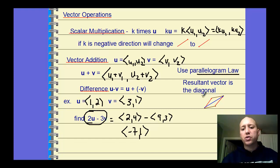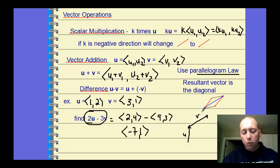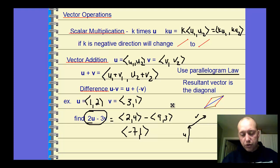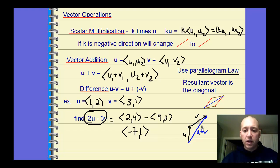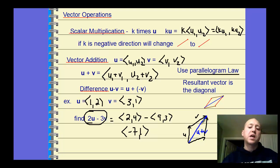The parallelogram law: the result of vector addition is the diagonal of a parallelogram. If you have vector U and vector V, you line them up by aligning the terminal point of one with the initial point of the other. The result — U plus V — goes from the initial to the final terminal, forming the diagonal. It doesn't matter which arrangement you use; you get the same result. The parallelogram is a way of drawing the operation visually.